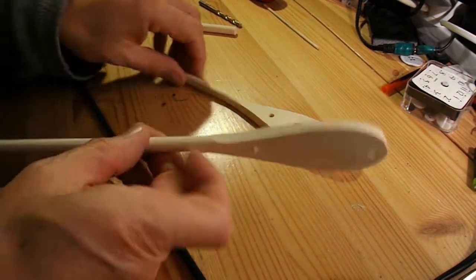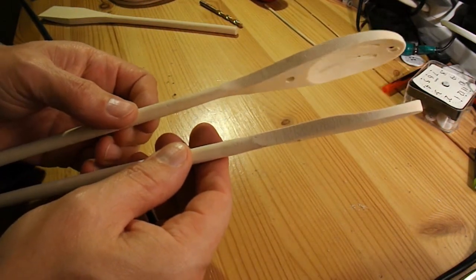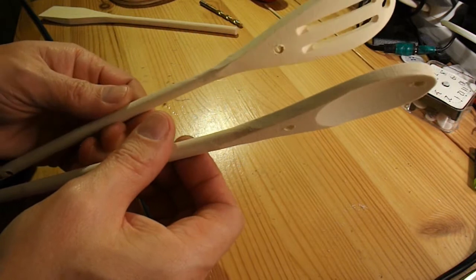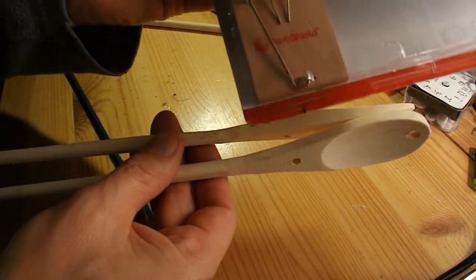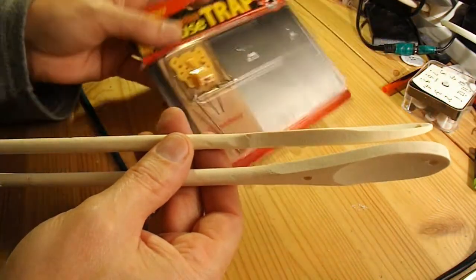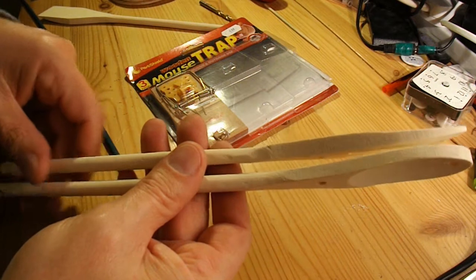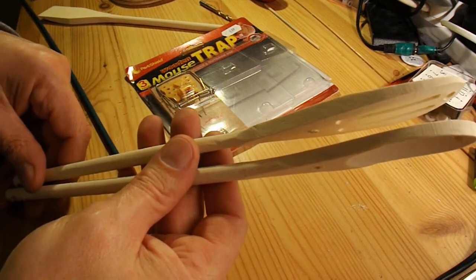And I'm going to make the distance between the two sides of the chassis about the width of one of my mousetraps. Because then I can convert it quickly from a rubber band powered car to a mousetrap powered car.